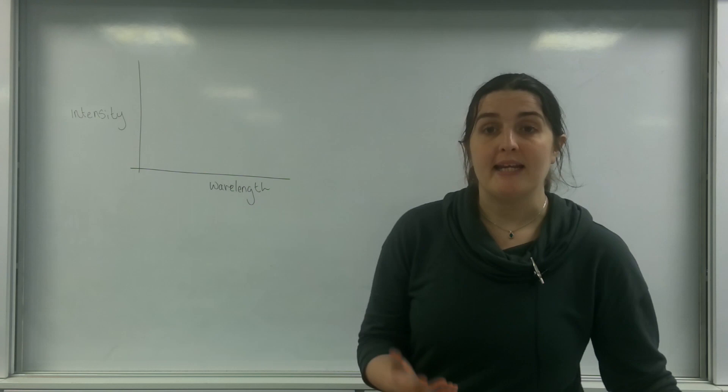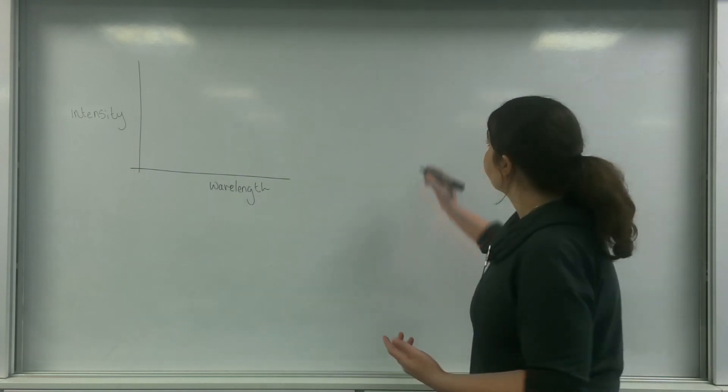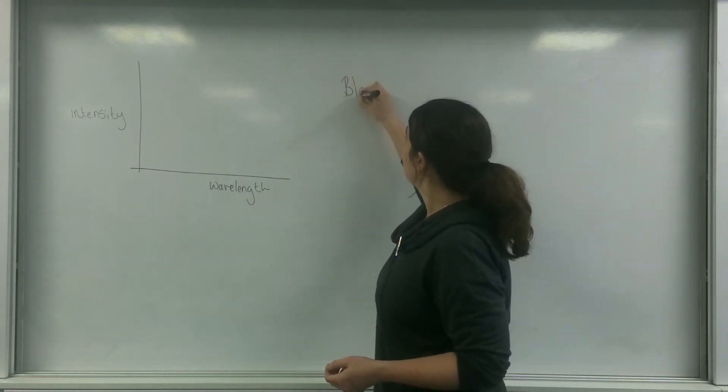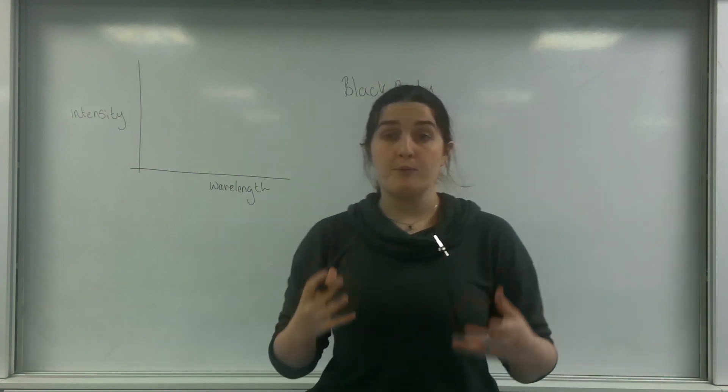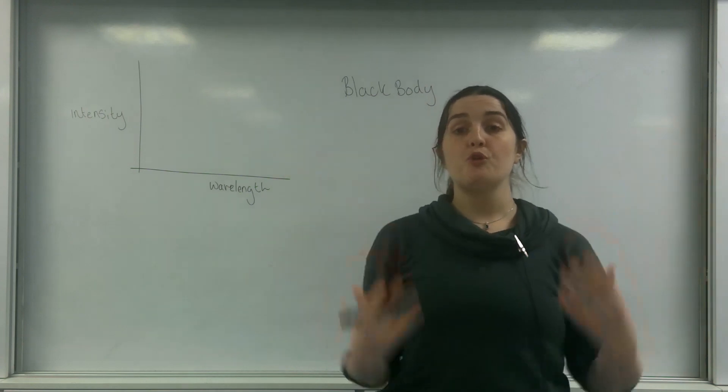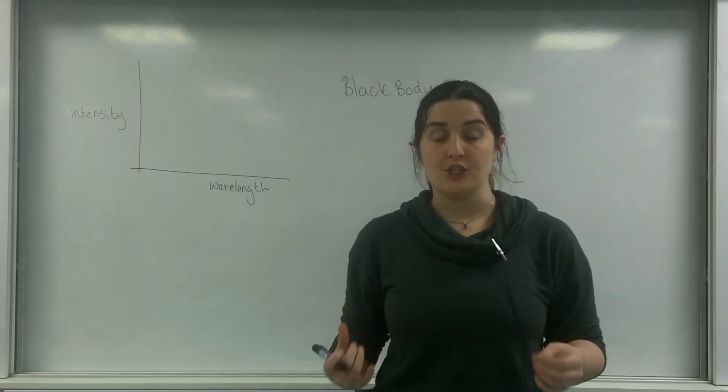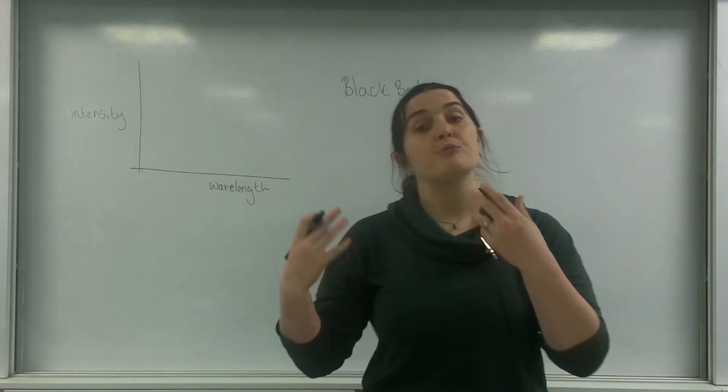So just to explain, a black body is something used in thermodynamics to express an object which not only absorbs all wavelengths of radiation but also can emit them too.